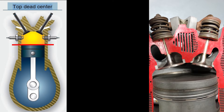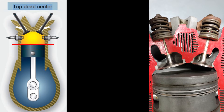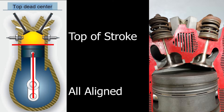The position of a piston in a reciprocating engine when the piston is at the top of its compression stroke and the wrist pin, crank pin, and center of the crankshaft are all inline — it's called Top Dead Center.